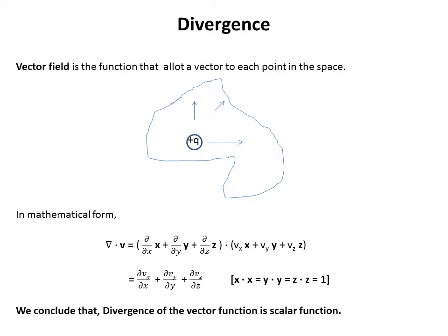First we come back to our main topic: divergence. We have to understand vector field. A vector field is a function that assigns a vector to each point in space. In the figure we have a positive charge Q on a closed surface. The electric field lines are stronger near the positive charge, and if you are away from the positive charge the flux is weaker. A long arrow represents strong electric flux and a short arrow represents weak electric flux.